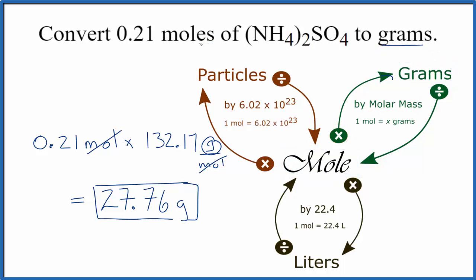If you were given grams and you wanted to find moles, you would do the reverse. You have your grams, you divide by the molar mass, and that'll give you moles.